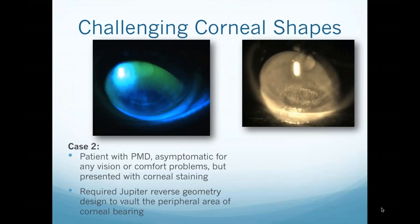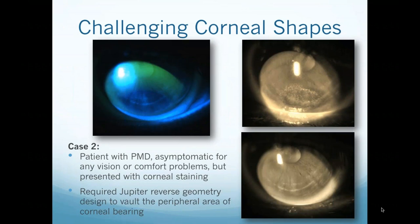Case two is a patient seen during residency who presented asymptomatic and happy with his lenses. However, there was a semicircular area of corneal touch at the inferior portion of his cornea, and when the lens was removed, a corresponding area of corneal staining was present. Though comfortable and with unaffected vision — as the touch was below the visual axis — leaving the lens this way long-term was not acceptable. He was refit from a standard design into a reverse geometry design to vault the peripheral area, clearing the corneal staining while maintaining vision and comfort. This is a good indication for pellucid marginal degeneration patients with very inferior ectasia.